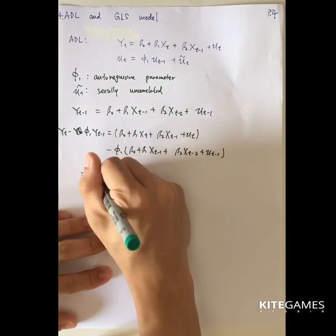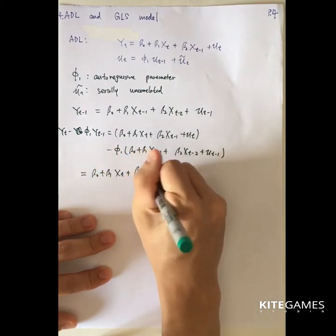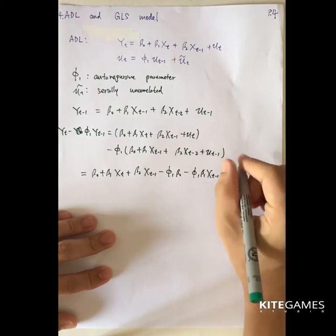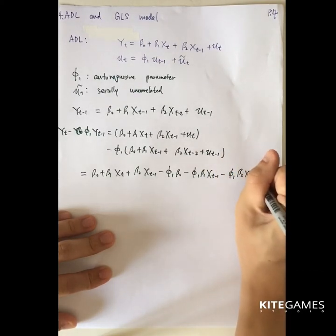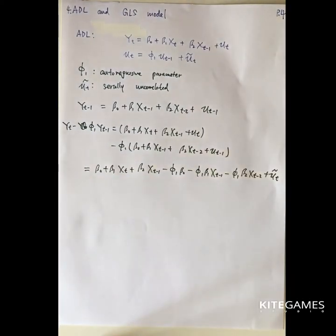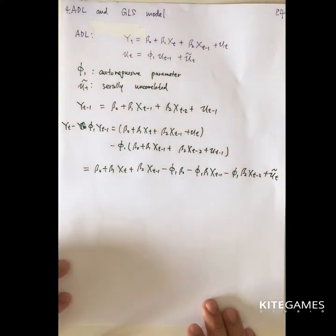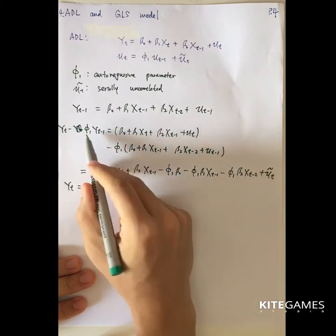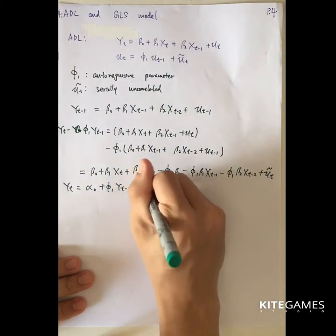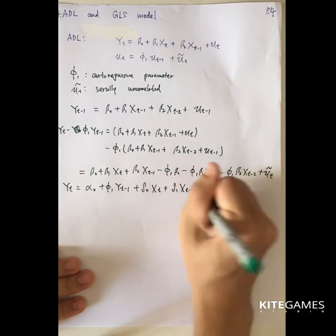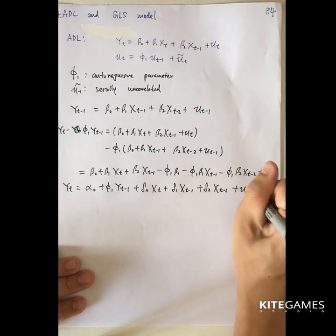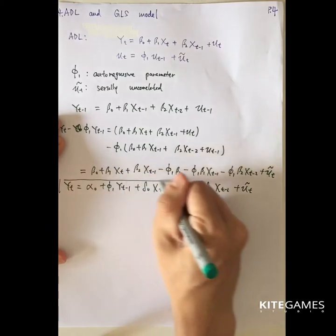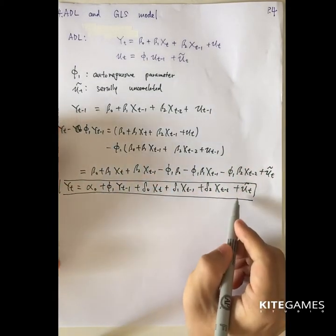Expanding this, you get beta_0 plus beta_1 xt plus beta_2 xt minus 1 minus phi_1 beta_0 minus phi_1 beta_1 xt minus 1 minus phi_1 beta_2 xt minus 2 plus u-tilde_t. By collecting terms and moving phi_1 yt minus 1 to the right-hand side, you introduce delta coefficients: alpha_0 plus phi_1 yt minus 1 plus delta_0 xt plus delta_1 xt minus 1 plus delta_2 xt minus 2 plus u-tilde_t.